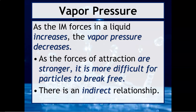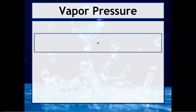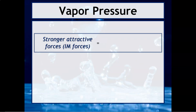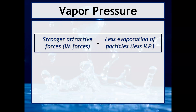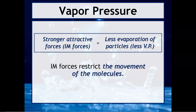We would say that this is an example of an indirect relationship — as one thing goes up the other thing goes down. As the attraction goes up, the vapor pressure goes down. If we have stronger intermolecular forces of attraction, we're going to see fewer evaporated particles and therefore lower vapor pressure. Those intermolecular forces are what restricts the movement of the molecules and keeps them from being able to form a gas.